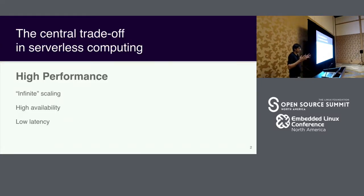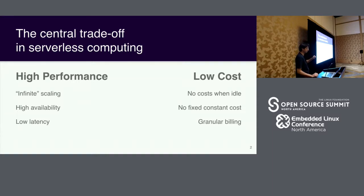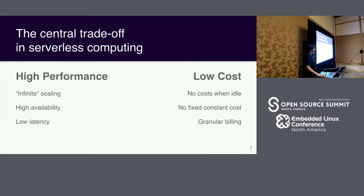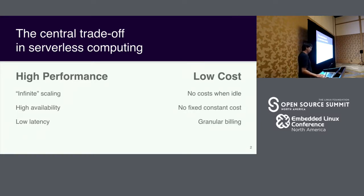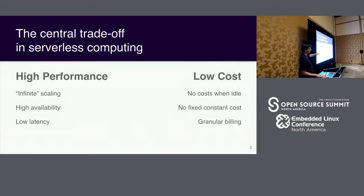The central tradeoff in serverless functions implementations is that of performance versus cost. The user of a serverless function system wants basically infinite scaling — you want to just never think about scaling and have the system take care of whatever throughput is thrown at that function. You want low latency, and you also want high availability. The user wants all of these things while also having low costs. A big selling point of serverless functions is that you don't pay when they're idle — a serverless function that's not running costs you very close to zero.